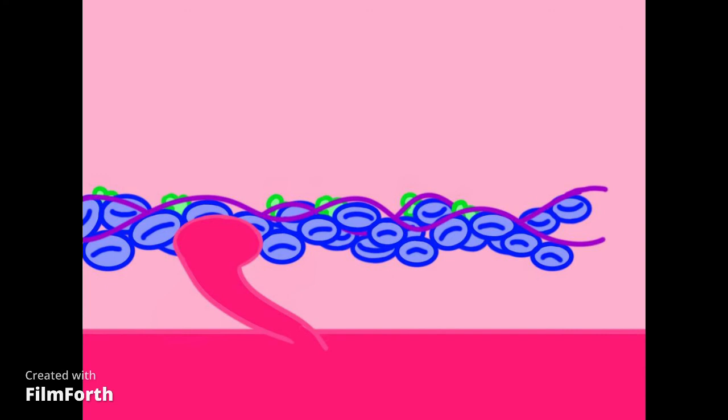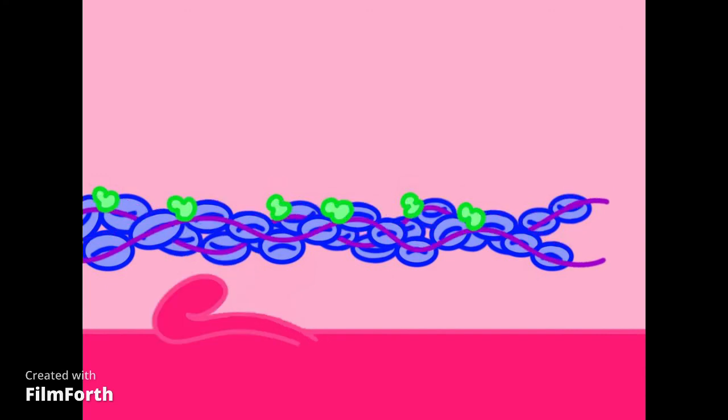When the signal ceases, the calcium ions are pumped back into the sarcoplasmic reticulum, and the troponin, without calcium, returns to its previous position, forcing the tropomyosin back into its guarding position so that myosin can't complete a crossbridge or a power stroke.